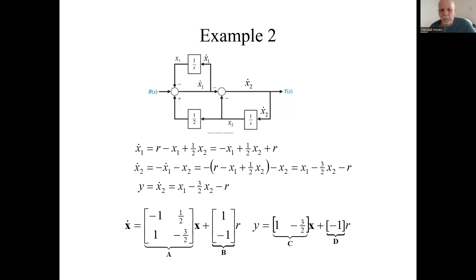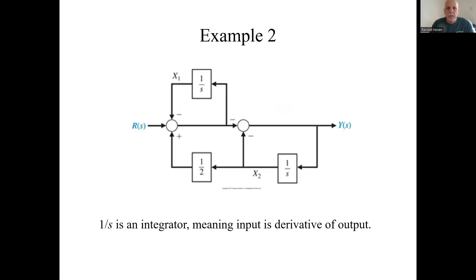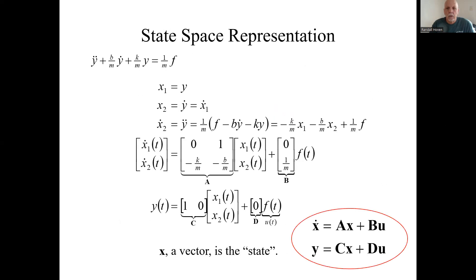And y was in terms of both: it has everything about x₁ and a minus three-halves x₂ minus one r. So you have the four matrices I need for state space representation: A, B, C, and D. Remember that's the state space format.